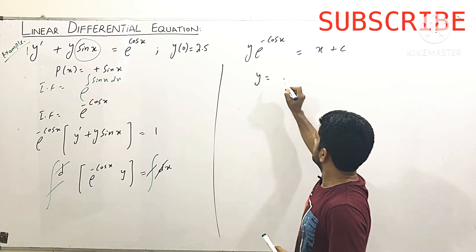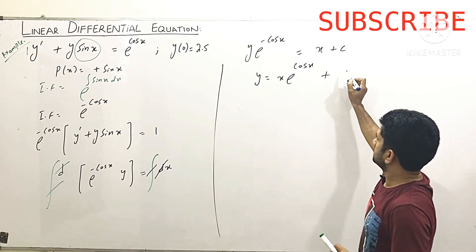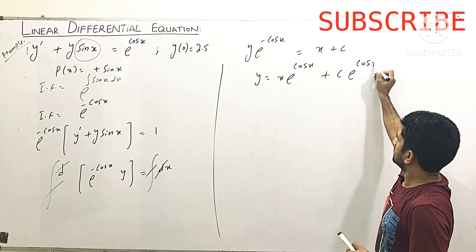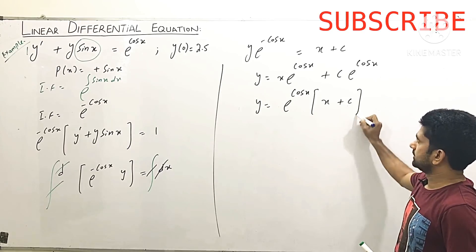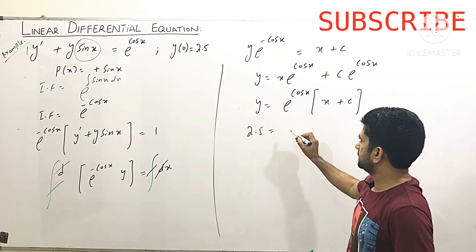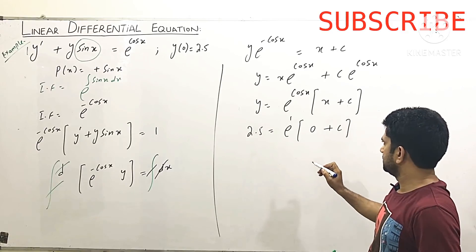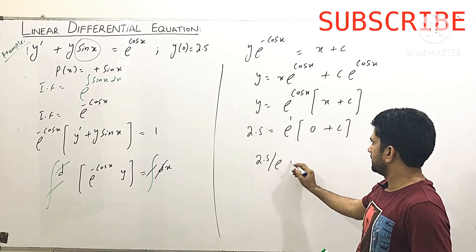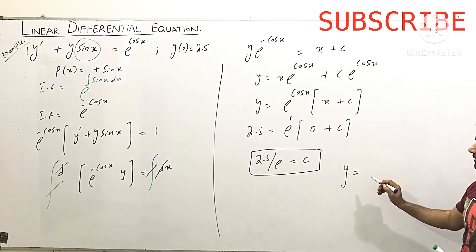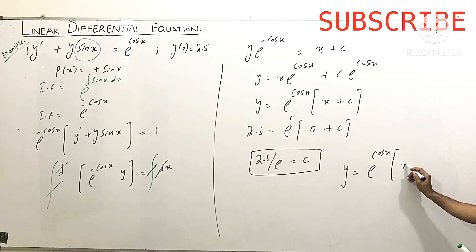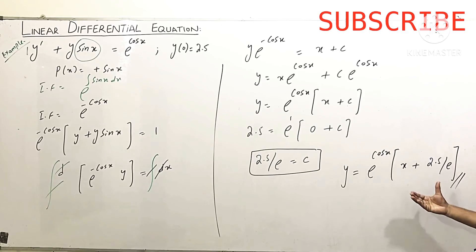So y = e^(cos x)·(x + C). Applying the initial condition y = 2.5 when x = 0: 2.5 = e^(cos 0)·(0 + C) = e·C, so C = 2.5/e. Substituting back, y = e^(cos x)·(x + 2.5/e), and this is our general solution.